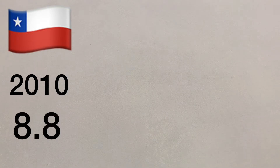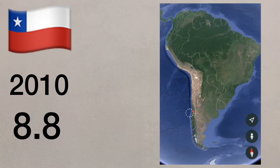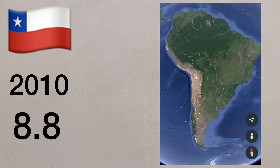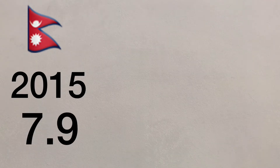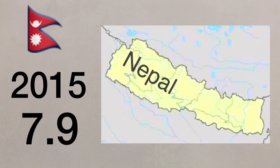The Chilean earthquake struck on the 27th of February 2010 and measured 8.8 on the Richter scale. The epicentre was just off the coast of Chile on a destructive plate margin. The Nepalese earthquake struck on the 25th of April 2015 and measured 7.9 on the Richter scale. It hit around 80 kilometres to the north of Kathmandu in the Himalayan foothills on a destructive collision margin.